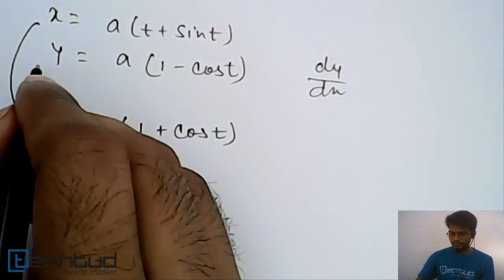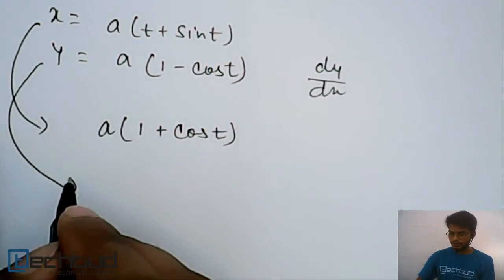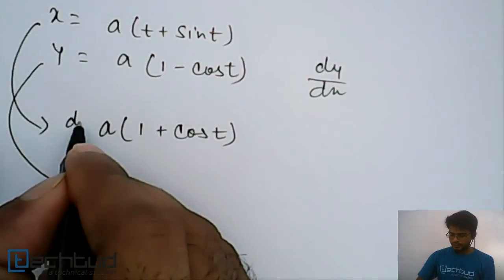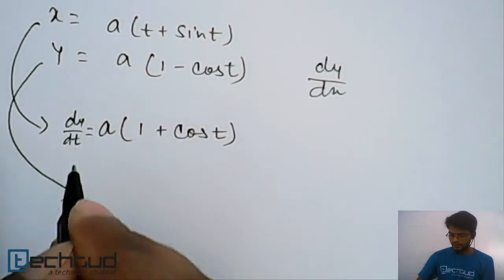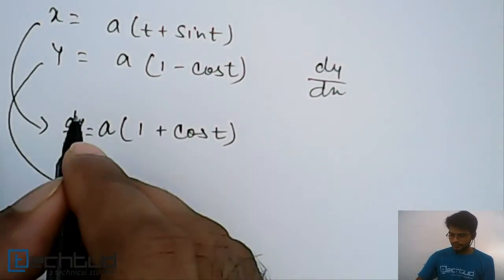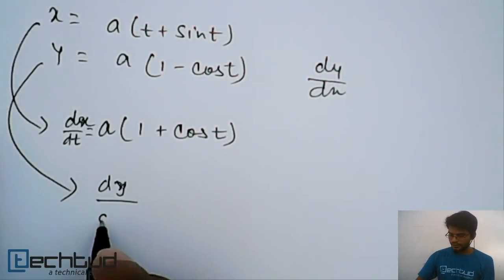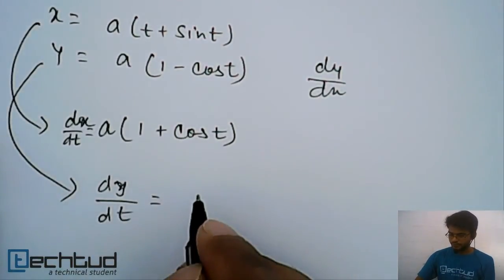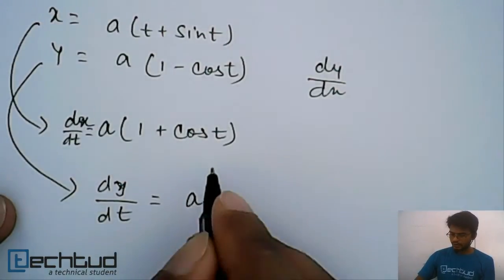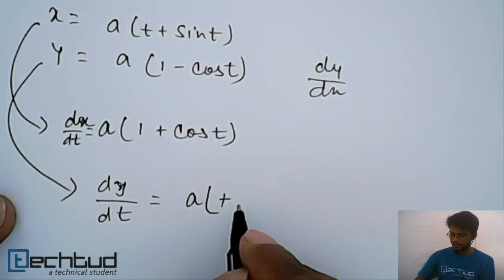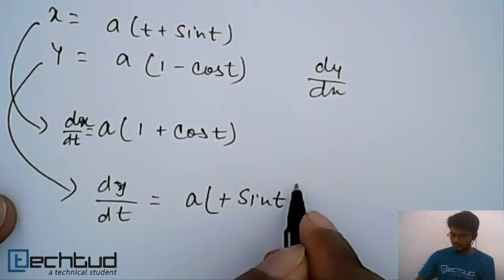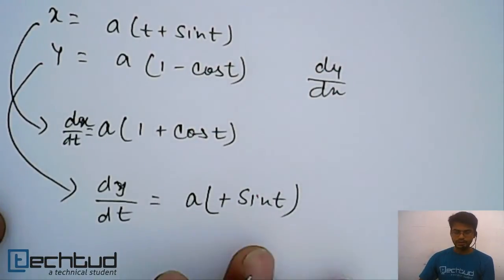And if we differentiate this with respect to t, that is, this was dy/dt - sorry, this is dx/dt. This is dy/dt. It will become a, and minus minus plus, so a sin t.